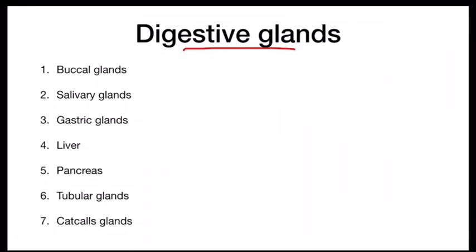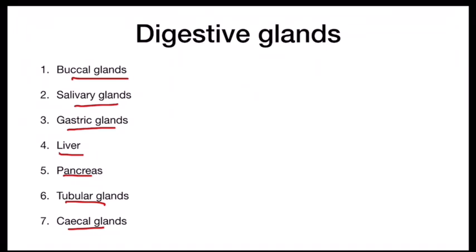The digestive glands of the digestive system include buccal glands, salivary glands, gastric glands, liver, pancreas, tubular glands, and cecal glands. In birds, digestion is very rapid because of high metabolism. In order to produce more energy for flight, birds have high metabolic rates, and the digestion is very fast. Birds can convert almost one-third of food into energy, whereas in humans only one-tenth of food is converted into energy. Due to this high conversion efficiency, only a little feces is formed in birds.